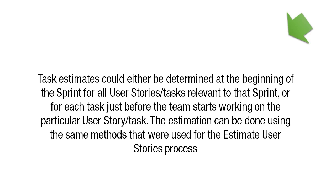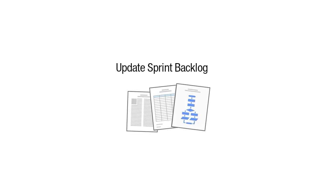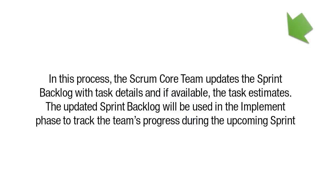The estimation can be done using the same methods that were used for the Estimate User Stories process. The last process in this phase is Update Sprint Backlog, where the Scrum Core Team updates the sprint backlog with tasks, details, and, if available, task estimates. The updated sprint backlog will be used in the Implement Phase to track the team's progress during the upcoming sprint.